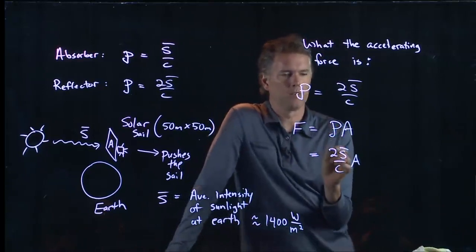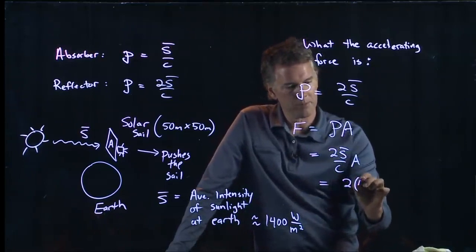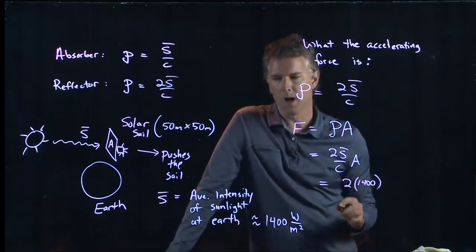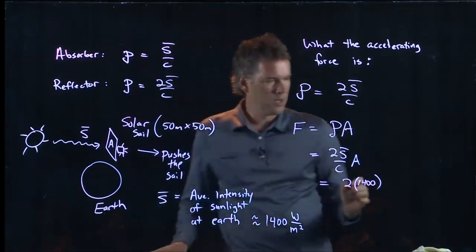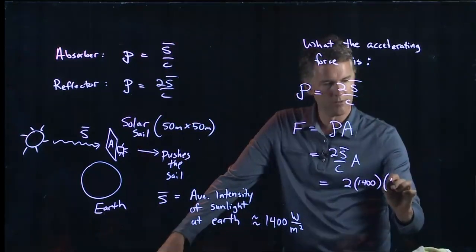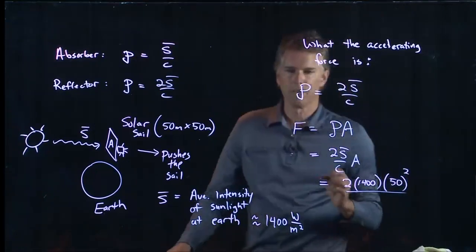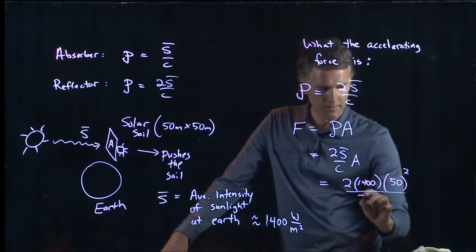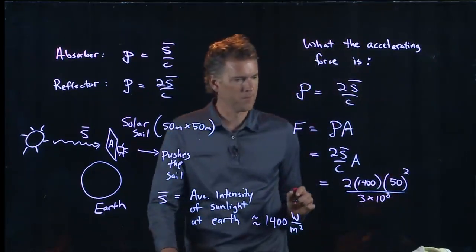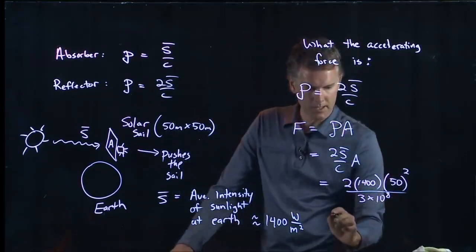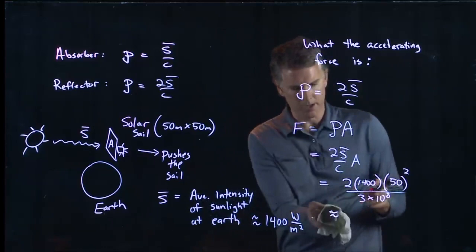So let's see if we can calculate this now. We've got 2 times S bar, which we just said is about 1,400 watts per square meter. We've got the area of the solar sail, which is 50 meters squared. And then we're going to divide by the speed of light, 3 times 10 to the 8 meters per second. So if somebody punched that into your calculator, tell me what you get.